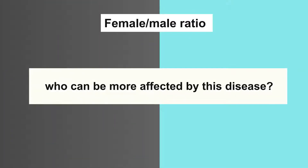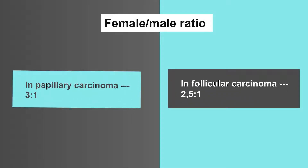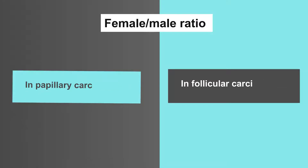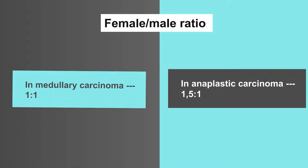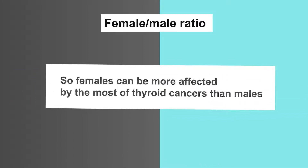Feature number three is female to male ratio, which means who can be more affected by this disease. In papillary carcinoma, 3 to 1. In follicular carcinoma, 2.5 to 1. In medullary carcinoma, 1 to 1. In anaplastic carcinoma, 1.5 to 1. So females can be more affected by most thyroid cancers than males.